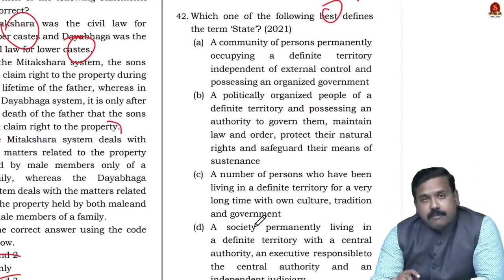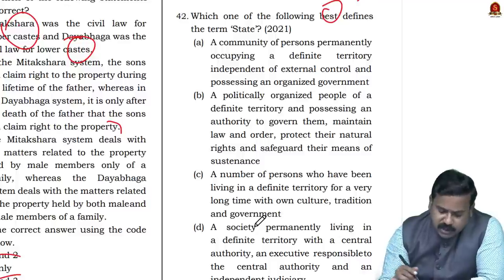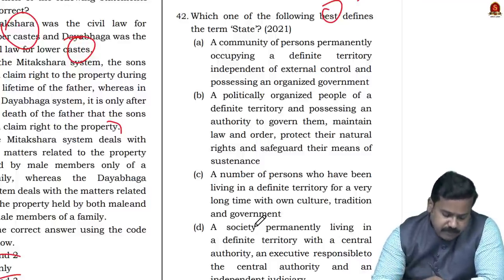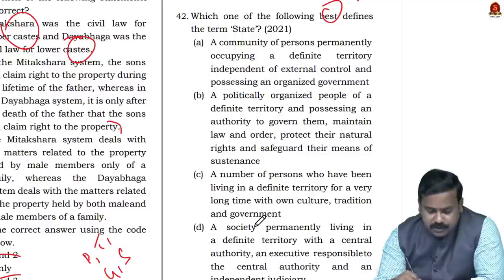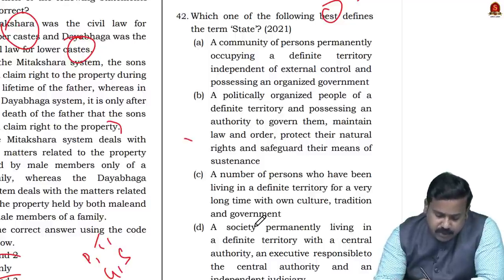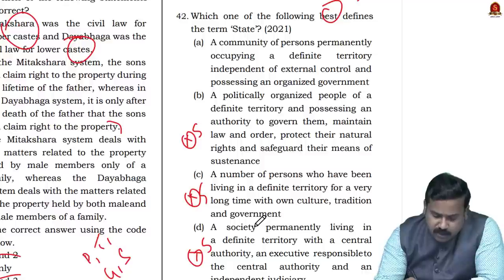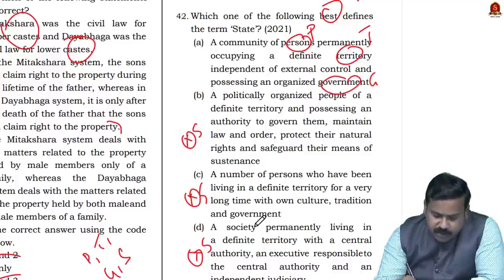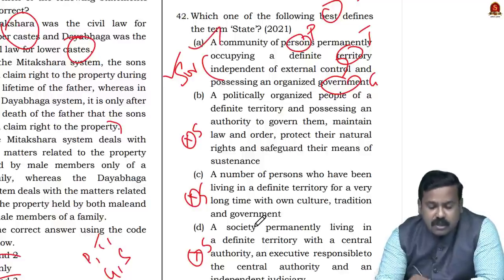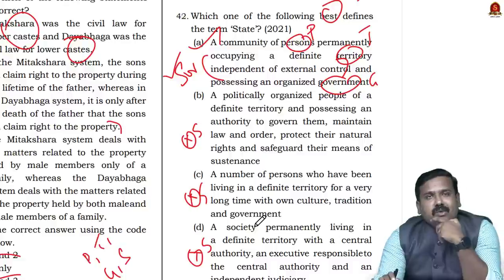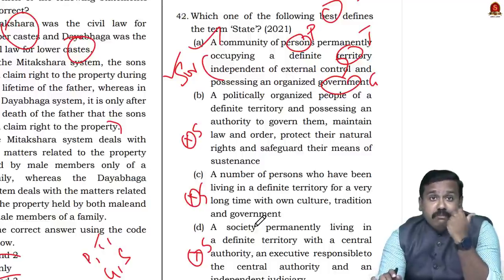Question 40: Which best defines a state? The four essentials of a state are population, territory, government, and sovereignty. In all the options given, sovereignty is missing from most — except option A, which mentions 'a community of persons permanently occupying a definite territory, independent of external control' — that phrase 'independent of external control' is what essentially means sovereignty. So the answer is A. When asked for 'best' or 'most appropriate,' there may be more than one correct answer, but you must choose the best one.